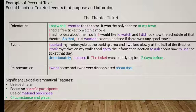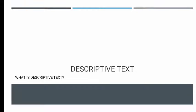Now let's move to the second type: descriptive text. What is descriptive text? Descriptive text is a text which says what a person or a thing is like. It is purposed to describe and reveal a particular person, animal, place, or thing.